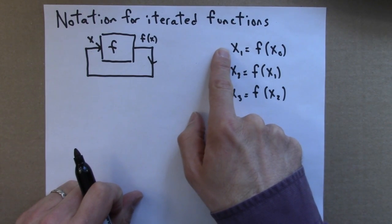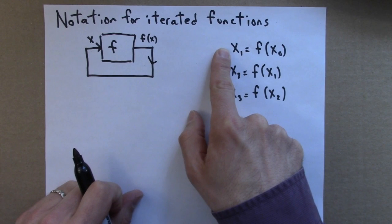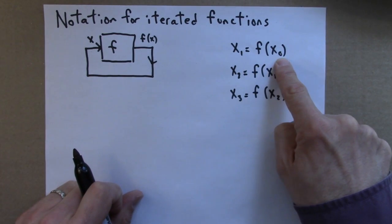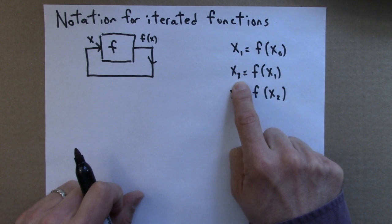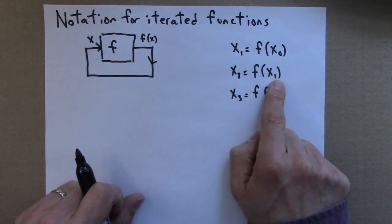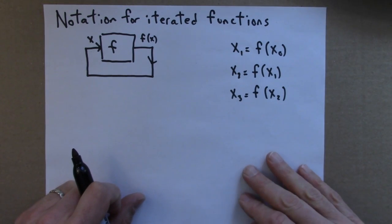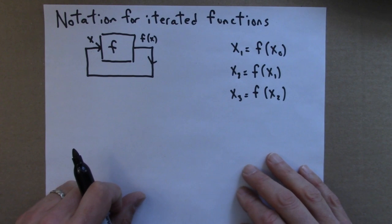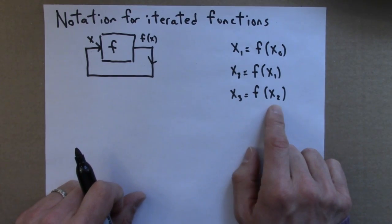So x1, the first value in the itinerary, is just f applied to my seed or initial condition. To get x2, I apply f to x1. To get the next value in the orbit, the next value in the itinerary, I just apply the function to the current value.